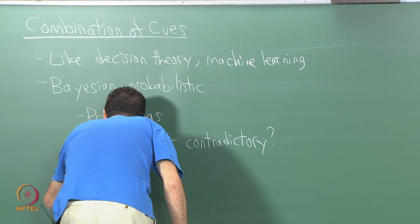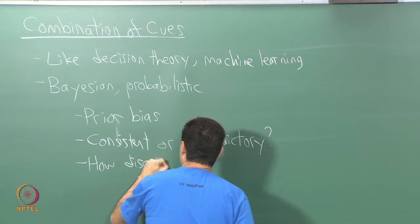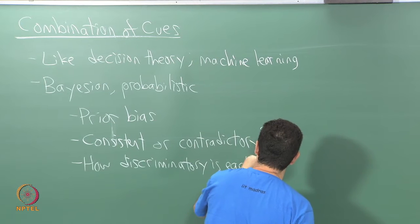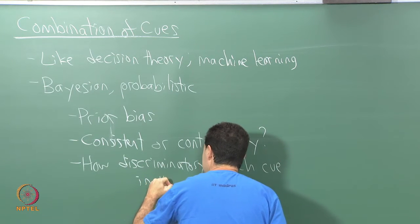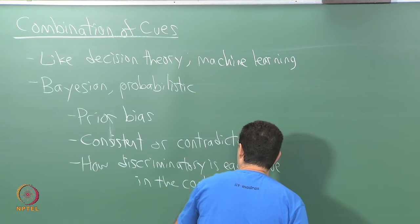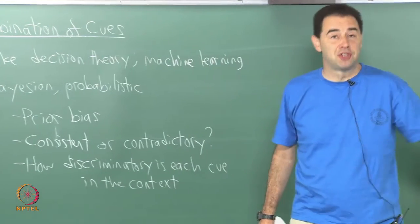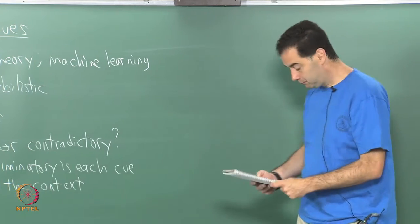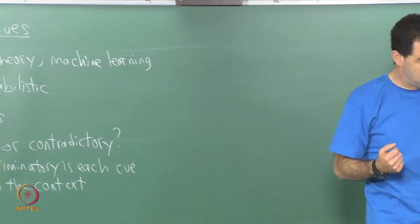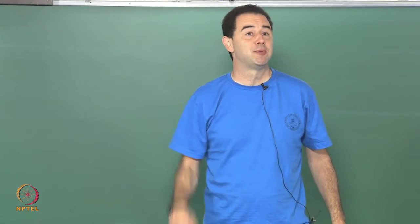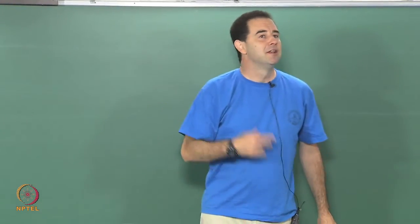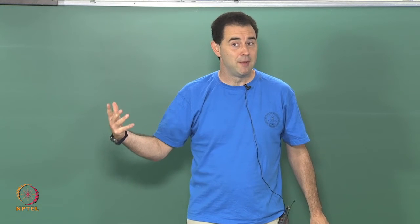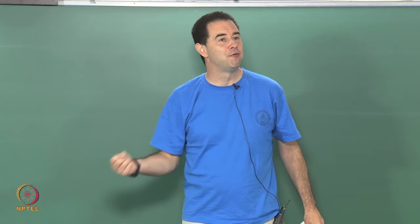How useful or how discriminatory is each cue in the context? Context could be in combination with all of your other senses and your memory of what places like whatever you are seeing have appeared like before. This generally applies to all aspects of perception—not only combining multiple cues from the same sense, but also combining information from multiple senses to make some kind of coherent view of the world with a very high amount of confidence.